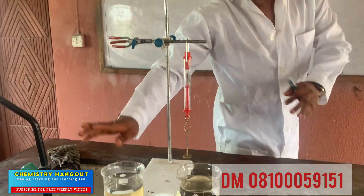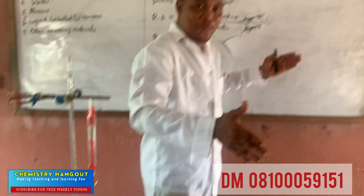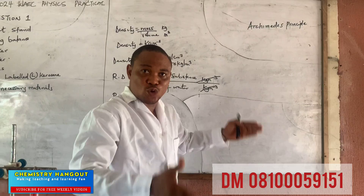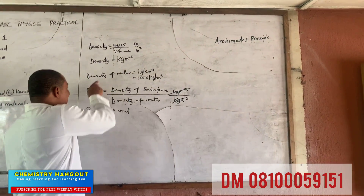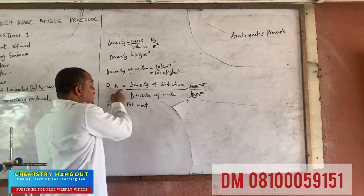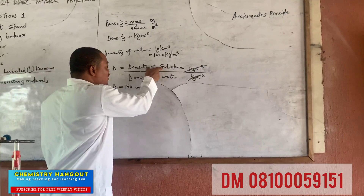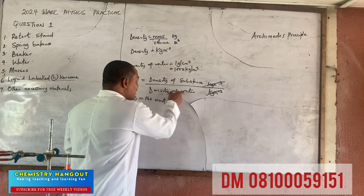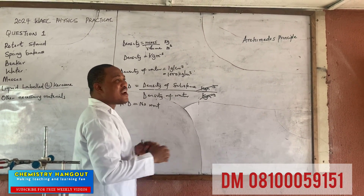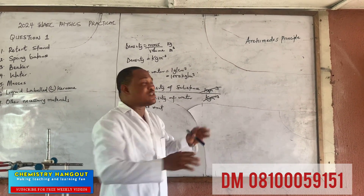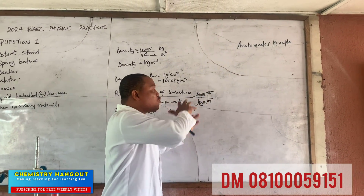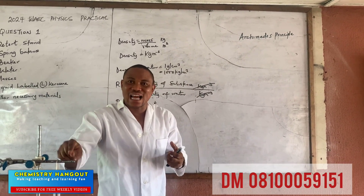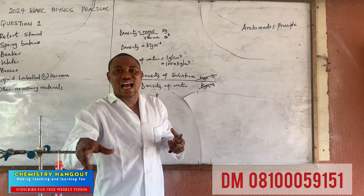This is water, this is kerosene, so we can compare the density of the two of them. Relative density is the density of the substance — which is kerosene in this case — over the density of water. The reason I'm just trying to do this is so that it will guide us to understanding what the practical is all about.